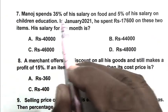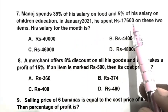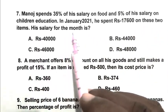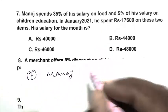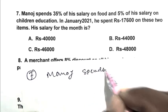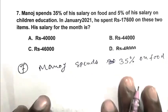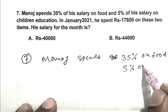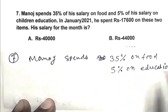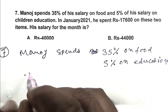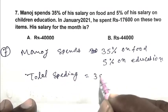Question number seven: Manoj spends 35% of his salary on food and 5% of his salary on children's education. In January 2021, he spent Rs. 17,600 on these two items. His salary for the month is? So friend, Manoj spent 35% on food, 5% on education. Total spending is 35 plus 5, that is 40%.